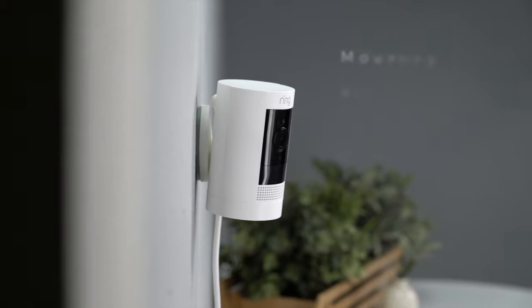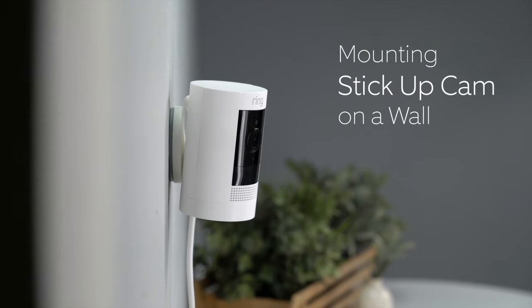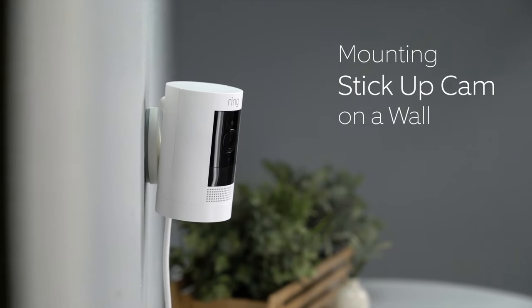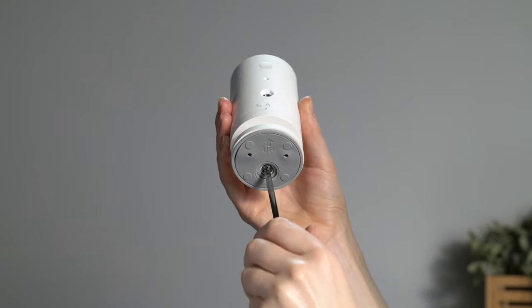Now let's look at how to mount your Stick Up Cam on a wall. First, remove the base by unscrewing it using a Phillips head screwdriver.